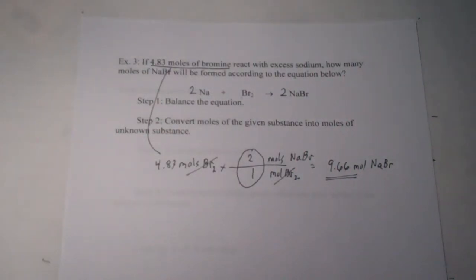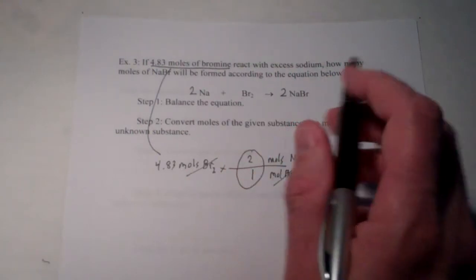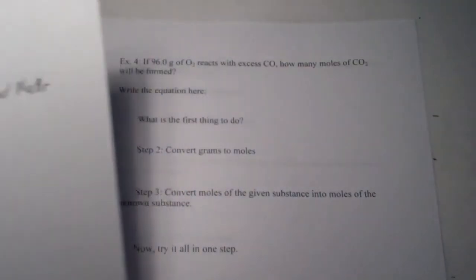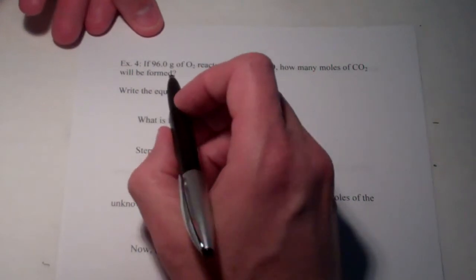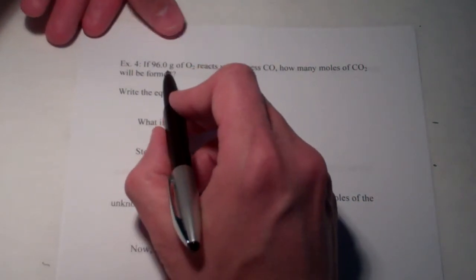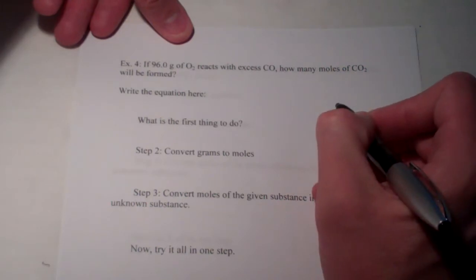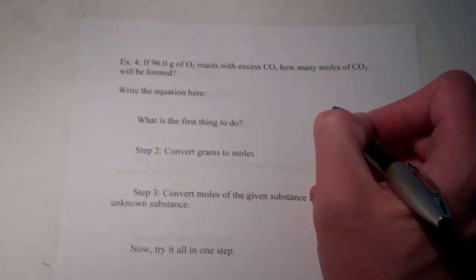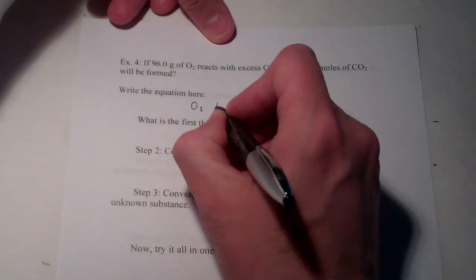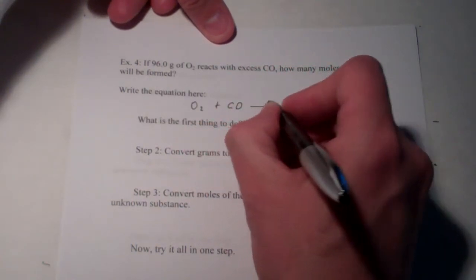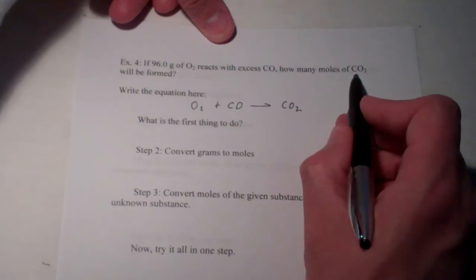So far, so good. Pretty straightforward. Once again, we're going to beat this to death today. The mole ratio comes from the coefficients in the balanced equation. Next up, let's make it a bit more challenging. This time, instead of starting with moles of known substance, let's start with grams. I have 96 grams of oxygen reacts with excess carbon monoxide to produce how many moles of carbon dioxide? Of course, to do stoichiometry, we have to start with a balanced equation. The equation is going to be oxygen reacts with carbon monoxide to produce carbon dioxide.